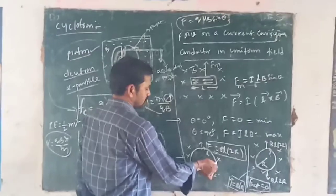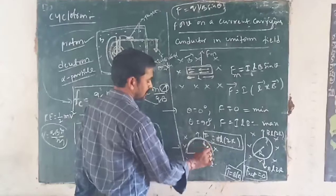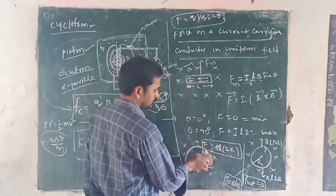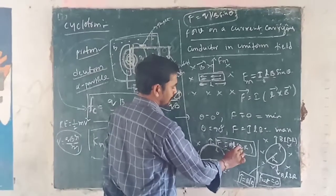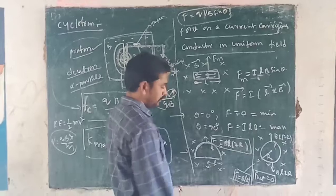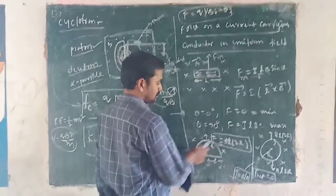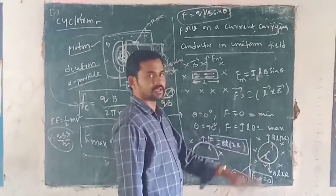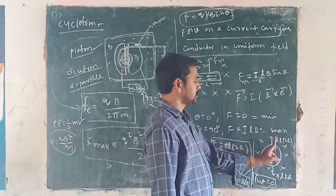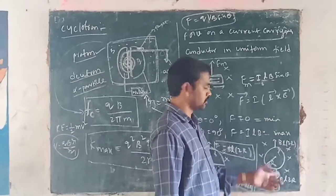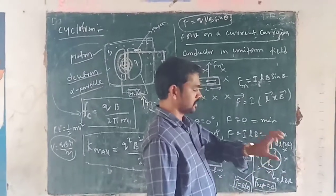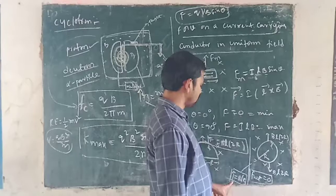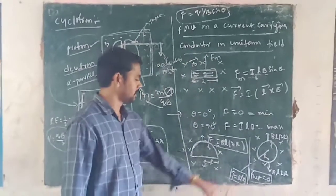If θ = 0°, length and field are in the same direction, no force acts. If θ = 90°, the conductor and magnetic field are perpendicular, and F = ILB — maximum force. For a semicircular conductor of radius R placed in a magnetic field, the force is BL × 2R (where 2R is the diameter). For a circular conductor placed in a magnetic field, the net force is zero — forces in one direction BL×2R and the opposite direction BL×2R cancel out. However, the tension in the conductor is T = BIR.